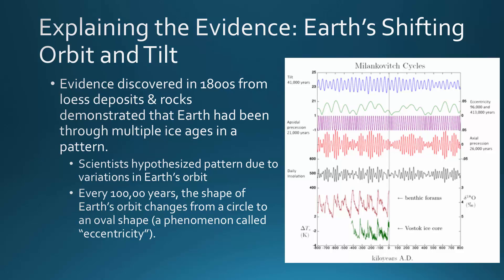Some evidence discovered in the 1800s from dust deposits and from rocks demonstrated that Earth had been through multiple ice ages, and that this happened with a fairly consistent pattern. You can see here a graph of daily insolation — that's how much solar radiation was getting to Earth's surface and causing warming at any given time. This is over a scale of thousands of years, condensed into one small graph. Scientists noticed this is a fairly steady, repeating pattern over time.